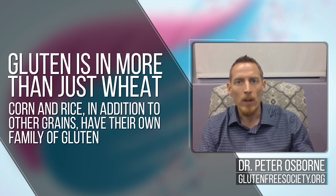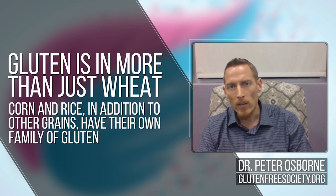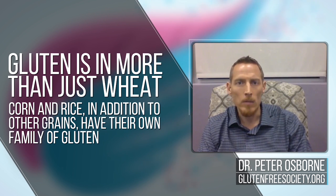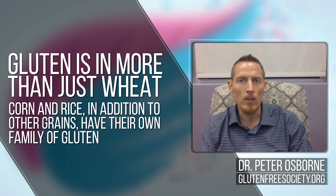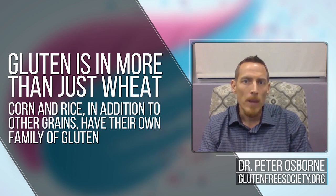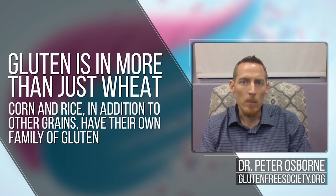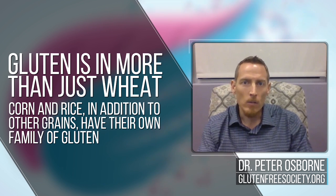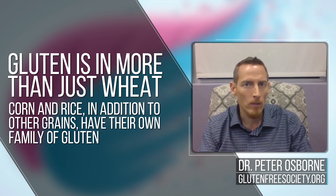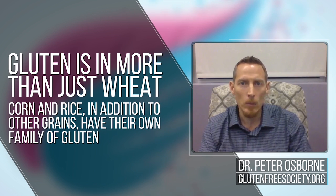Corn has its own family of glutens. Rice has its own family of glutens. And these glutens are very similar from one grain to the other. Some people react to the rice gluten; some people are reacting to the corn gluten more aggressively than they're reacting to the wheat gluten.